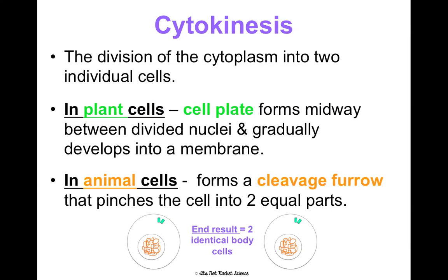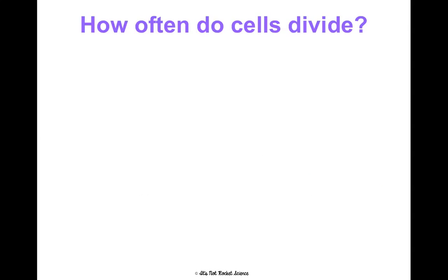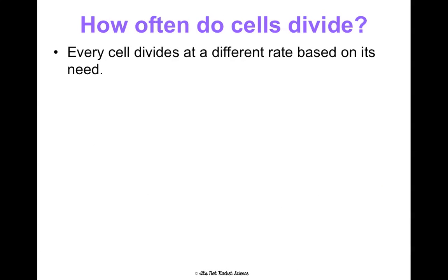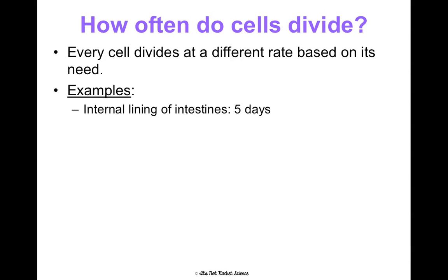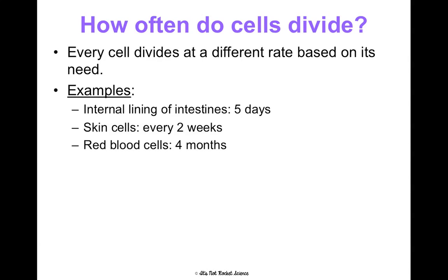Either way, the end result is two identical body cells with the exact same amount of DNA as the original cell. In humans, we start with 46 chromosomes and end with two cells each containing 46 chromosomes. Cell division happens at different rates depending on the cell: the intestinal lining divides every five days, skin cells every two weeks, red blood cells every four months — which is why you can only give blood once every four months — and liver cells only once a year.